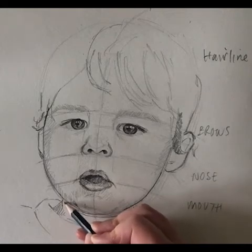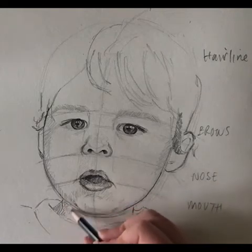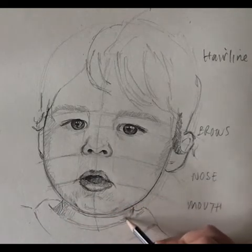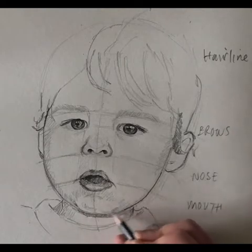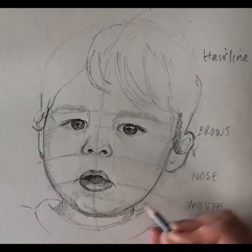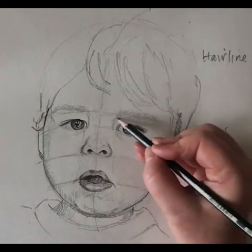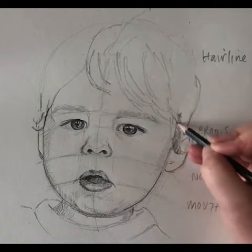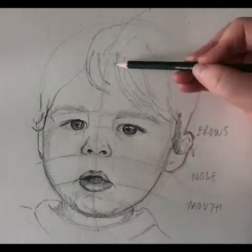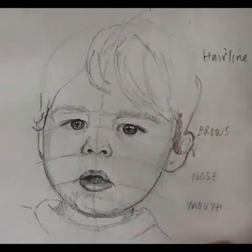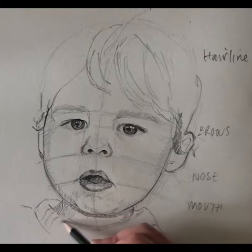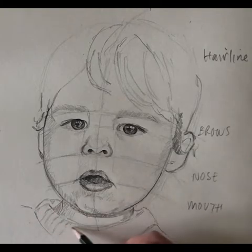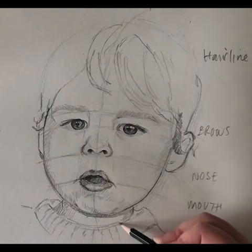Quick little sketchy bits in there for the shade. The neck is always darker because it's shaded by the head. Usually the foreground of the neck is brighter — so the front of the neck. Just getting in a little bit of detail there with the jumper.